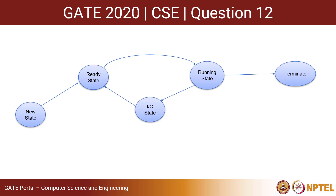The ready state resides in the main memory, and we all know that the capacity of main memory is limited. So if there are many processes present in the ready state, some of them can be taken into a blocked-ready state, which normally resides in secondary memory. There is a to-and-fro movement between the blocked-ready state and the ready state depending upon the memory capacity of the system.